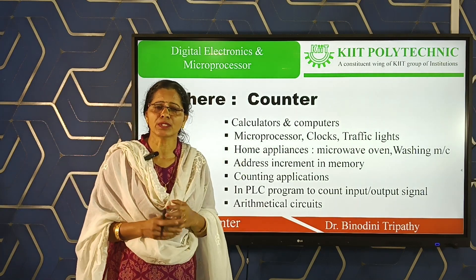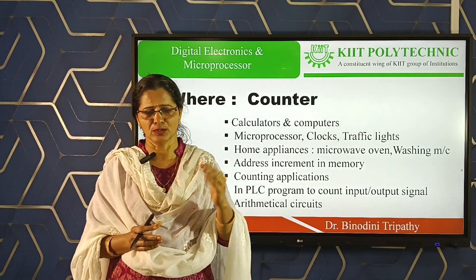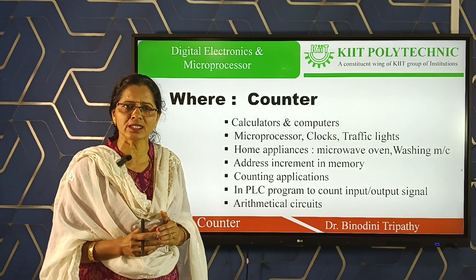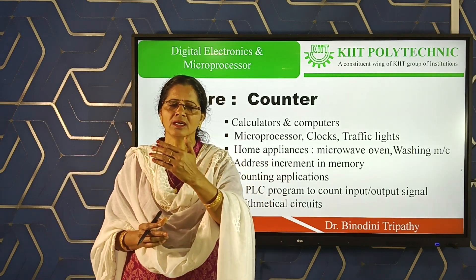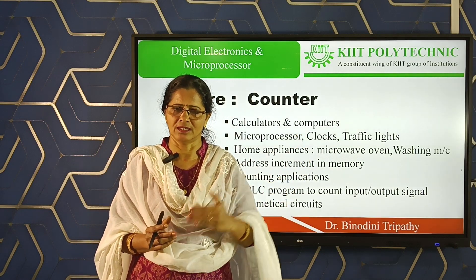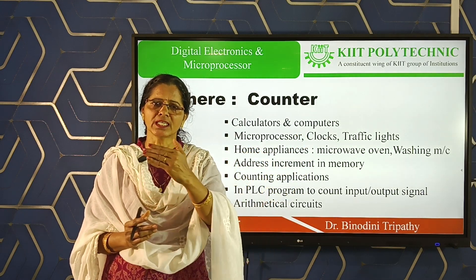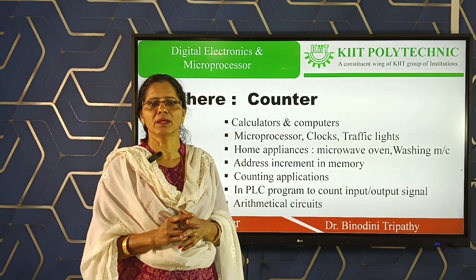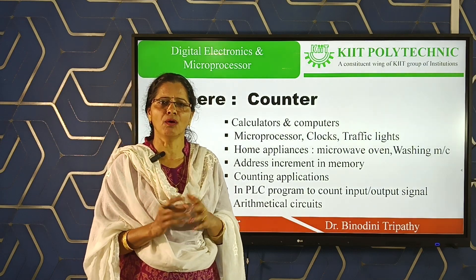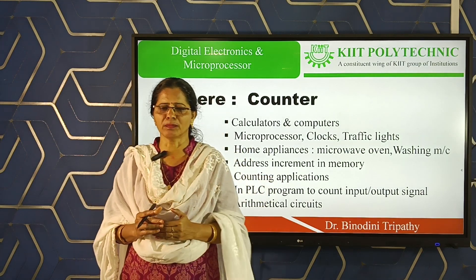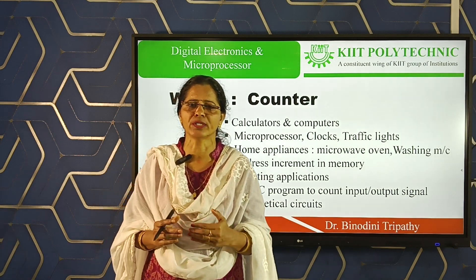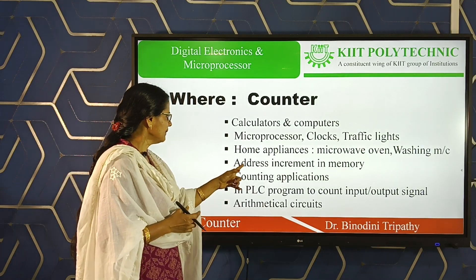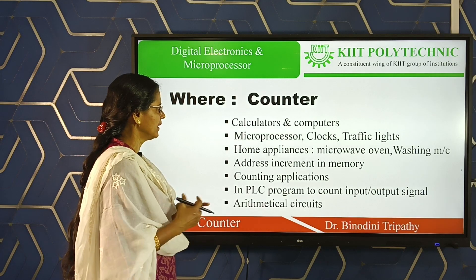In addressing memory devices, you have a memory device with an address for each location. Those addresses have a descending and ascending order — you try to move in ascending order or go through a descending order. Both types of movement are required in a memory device. How we increment or decrement our memory location is possible due to the use of a counter. Address increment and decrement also require the counter.